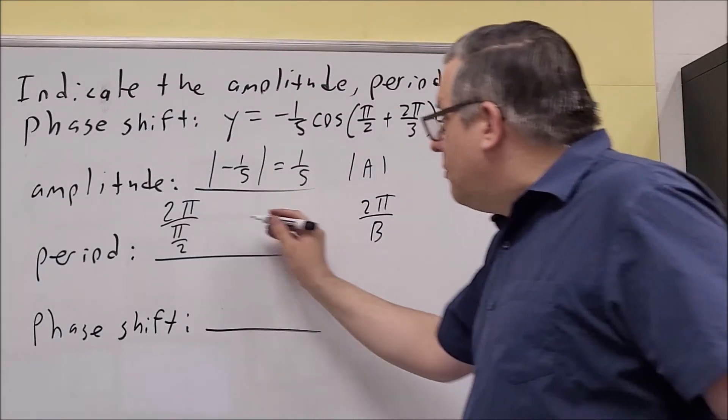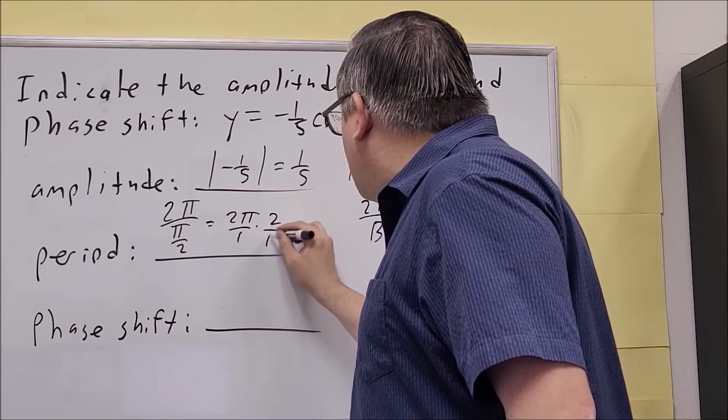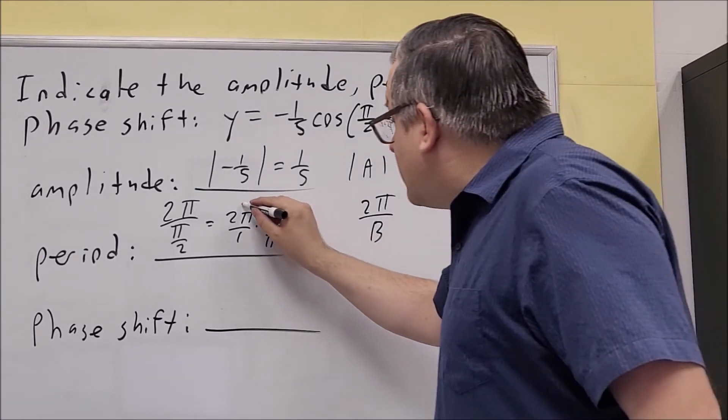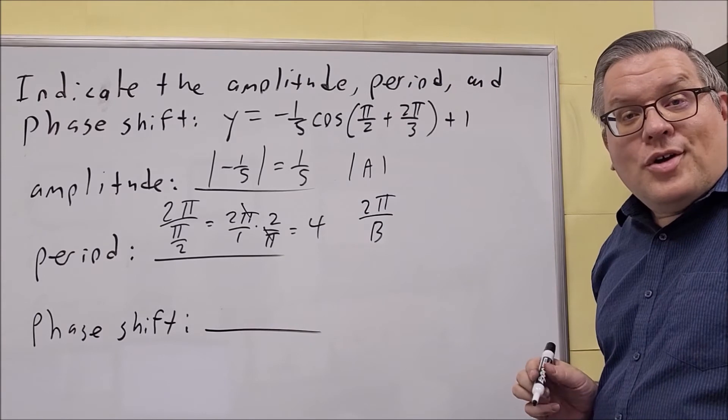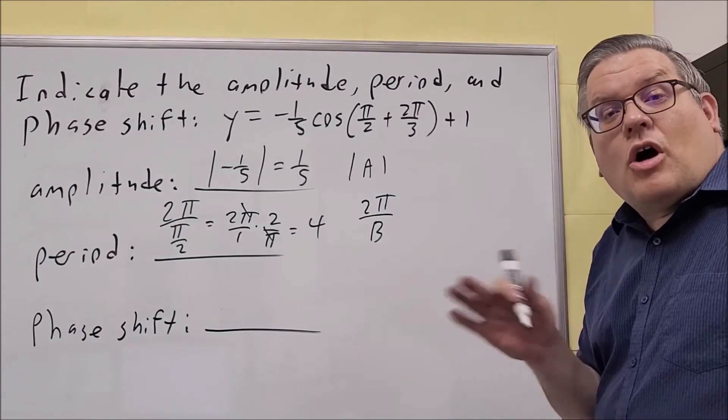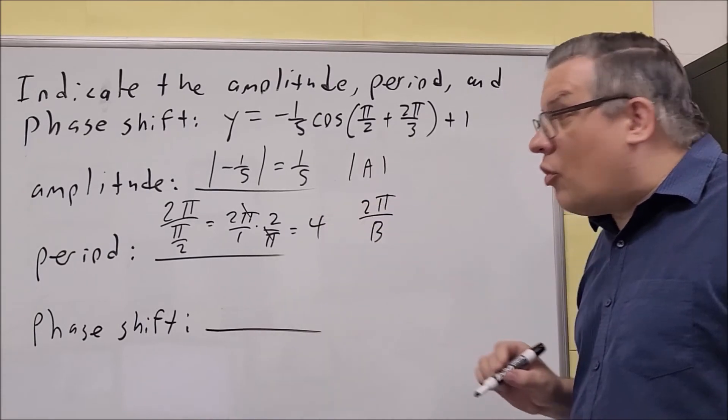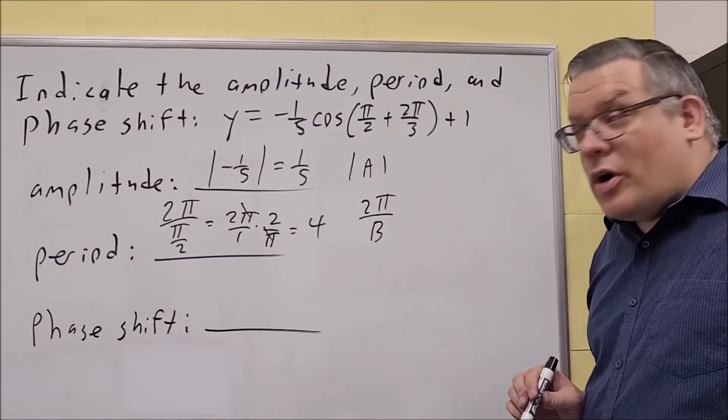So we're going to do 2π over 1. And we're going to multiply by the reciprocal, 2 over π. Now the π's are going to cancel here. And you get a 4 for your period. So your period doesn't always have to have a π in it. There's some cases where you might end up with a whole number for your period. And also phase shift could be a whole number as well.